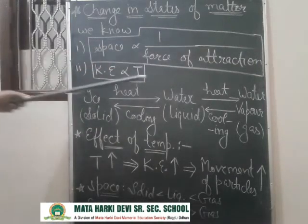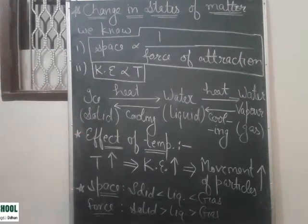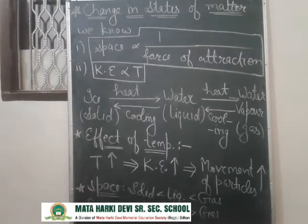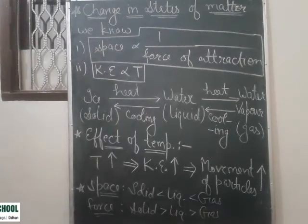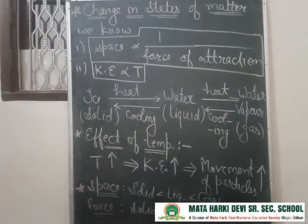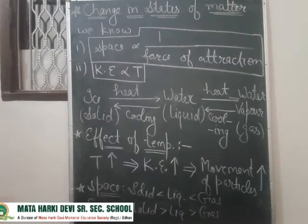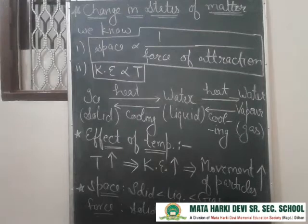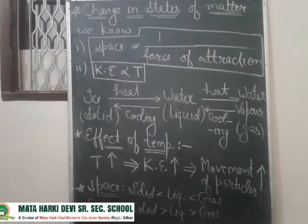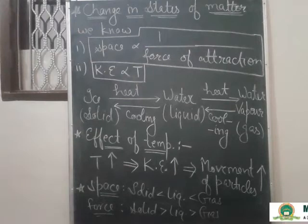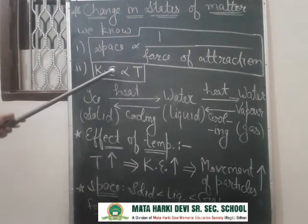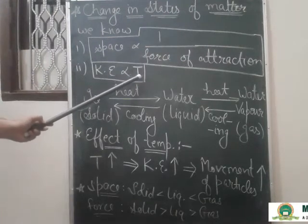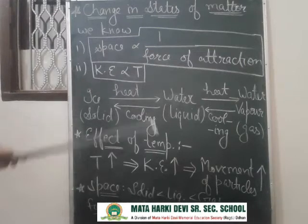Now, using these assumptions, we will understand this process. For example, we have ice in a beaker and we turn on a burner. As heat is supplied, the temperature increases. According to our second assumption, as temperature increases, the kinetic energy of the particles increases. So the kinetic energy of the ice particles increases.